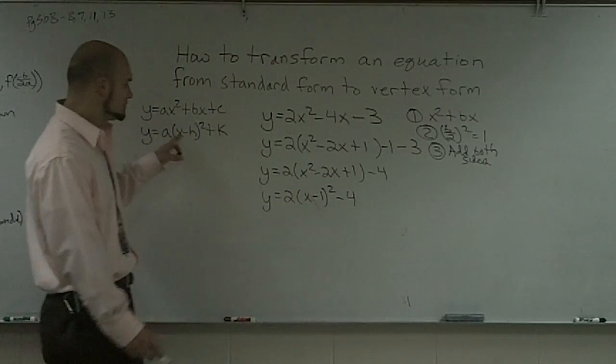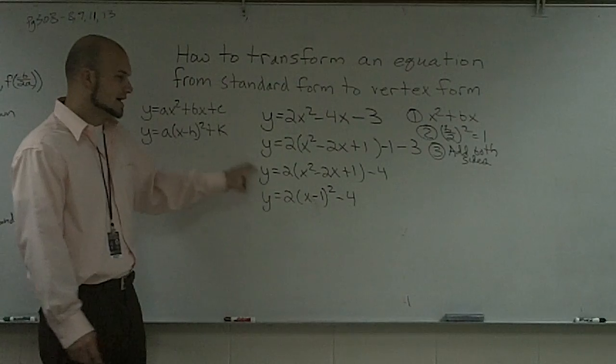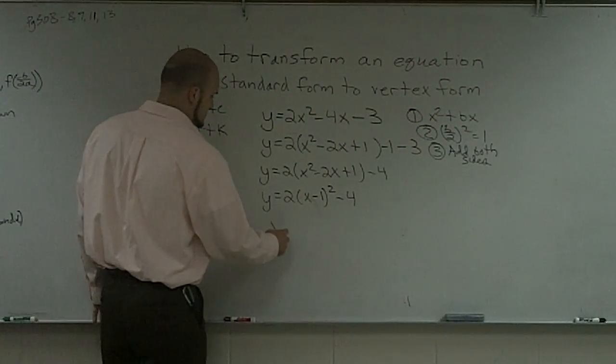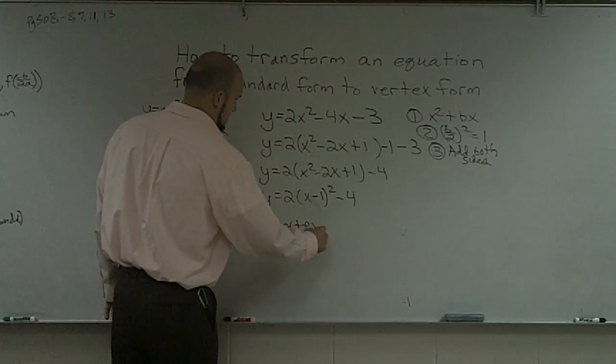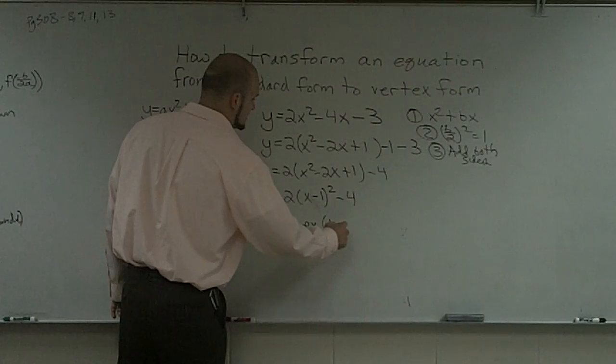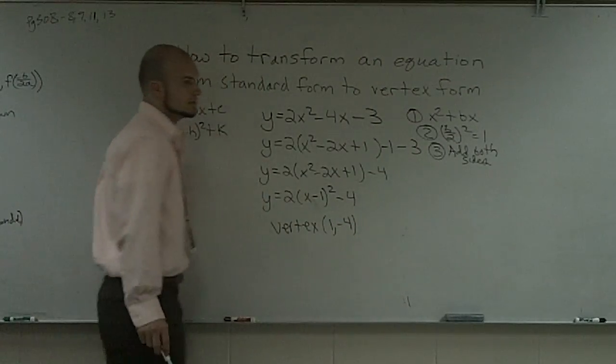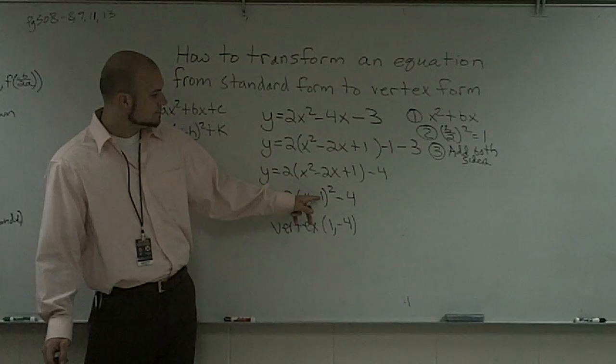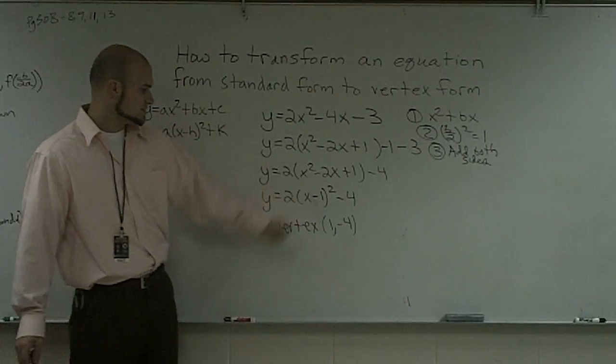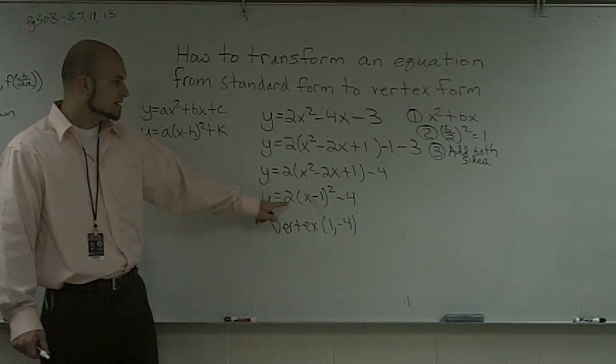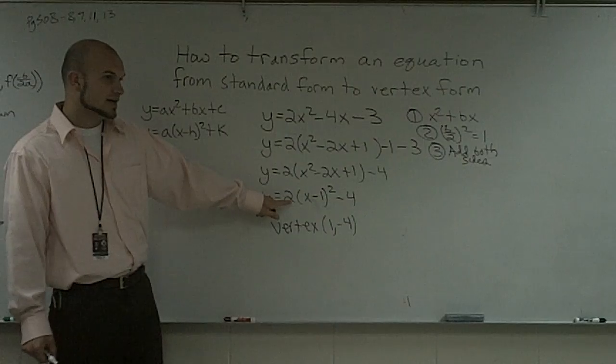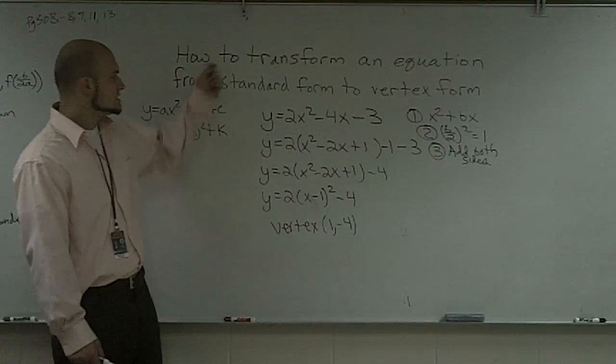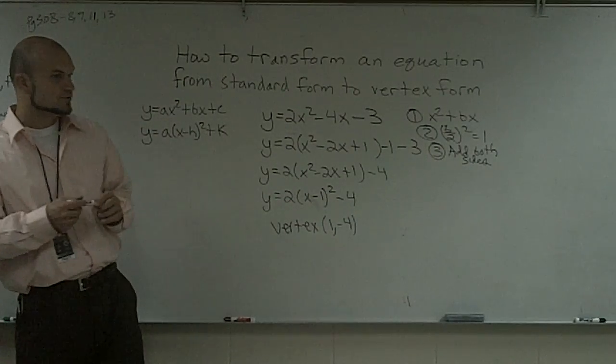Now I've completed my problem into vertex form. From here, I can say that I have a vertex of (1, negative 4). Because remember that this is always going to be your positive because in the formula it's x minus h. And then I'm also going to have a compression factor of 2. So that's how you transform an equation from standard form to vertex form.